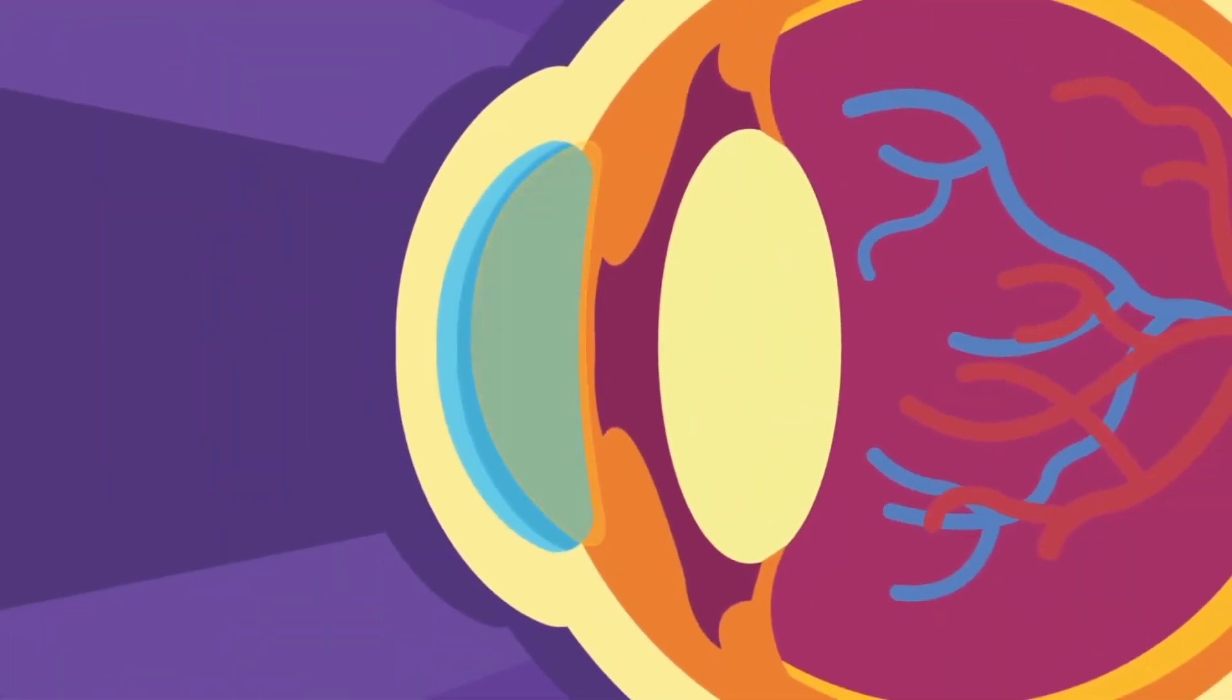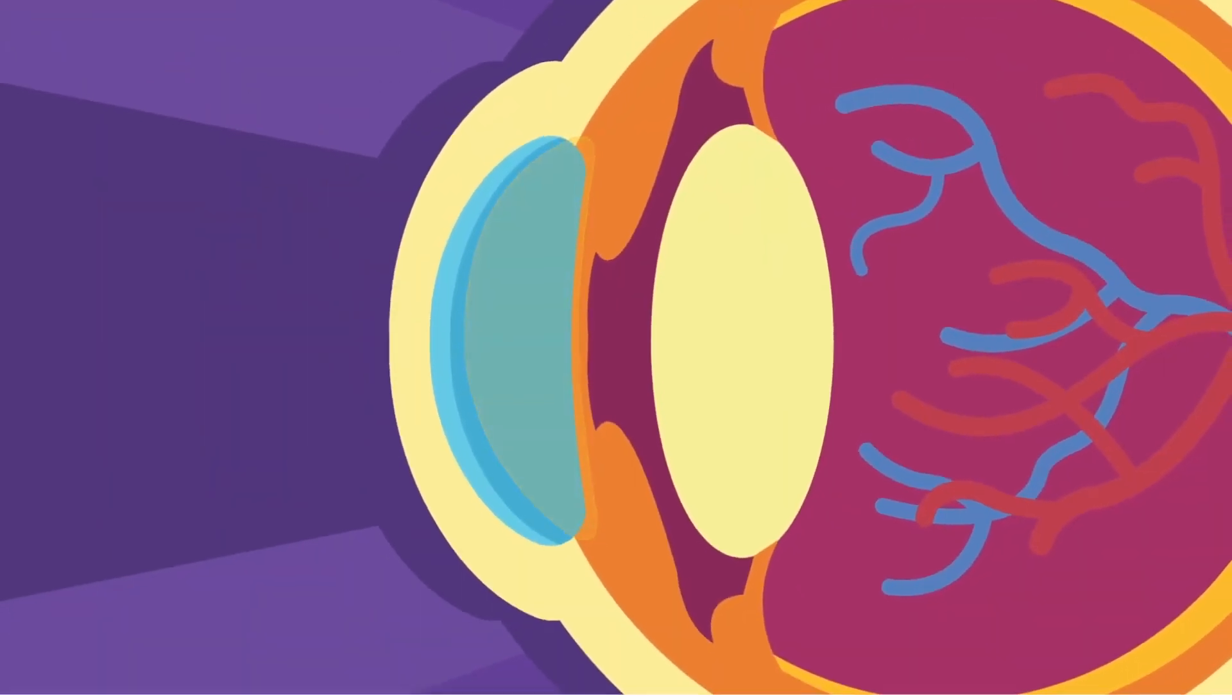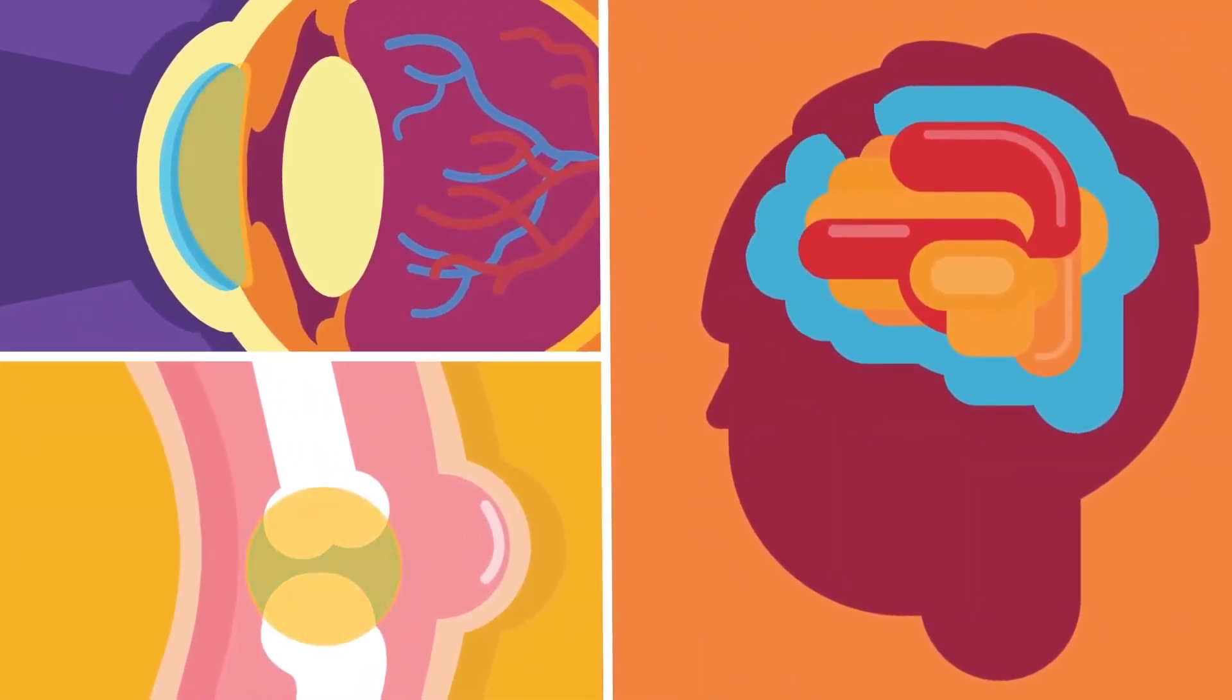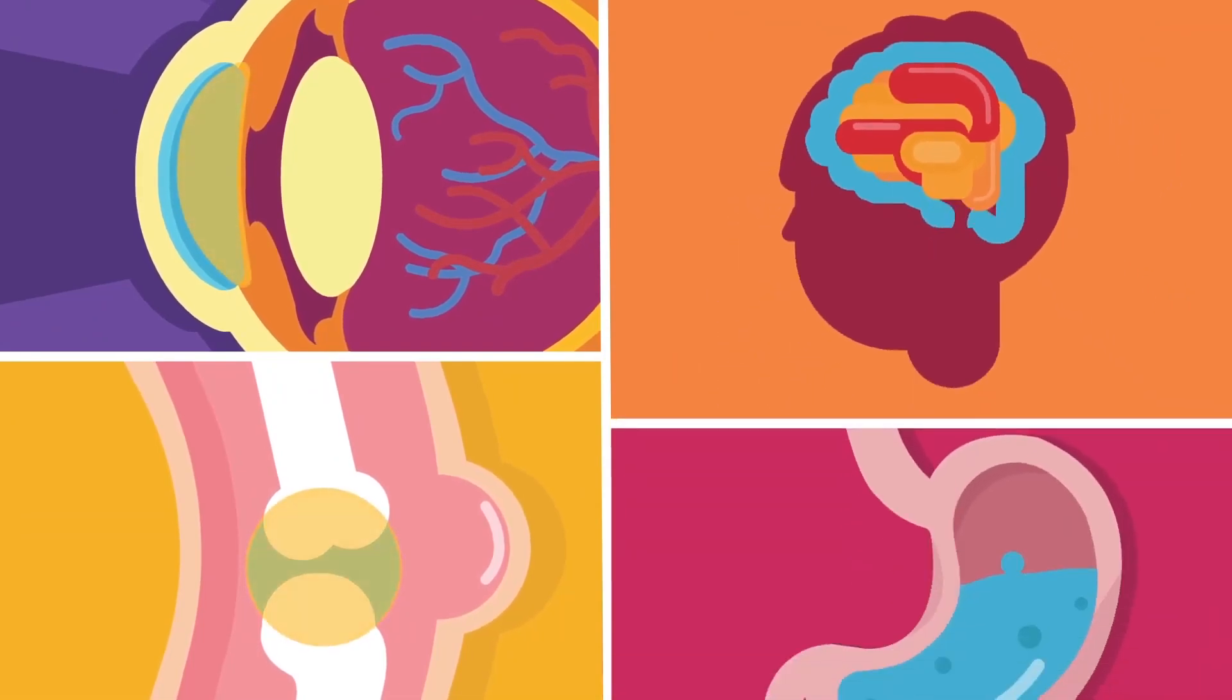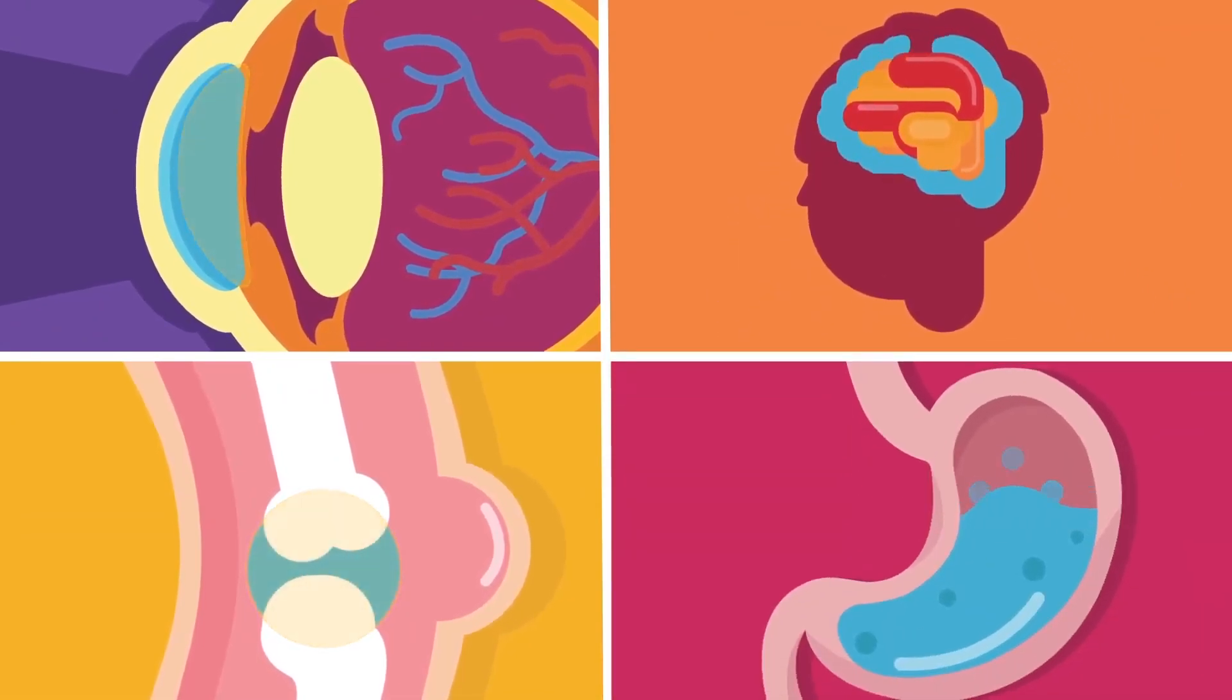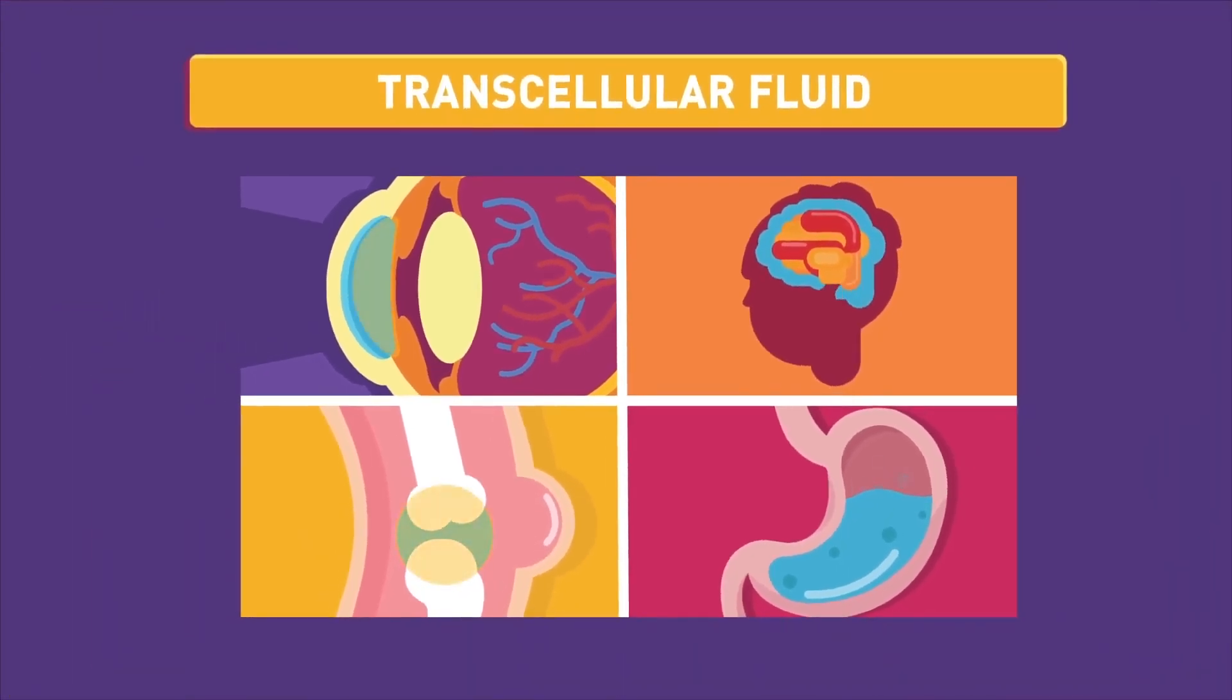The transcellular fluid includes the aqueous humour in the eye, the synovial fluid in the joints, and the cerebrospinal fluid in the brain and spinal cord. Saliva and other gut fluids like gastric juice and pancreatic juice can also be defined as transcellular fluid.